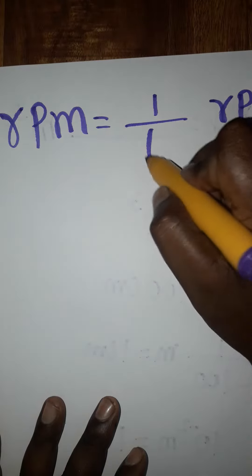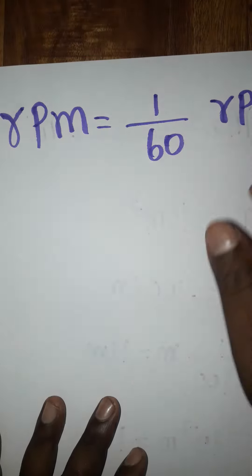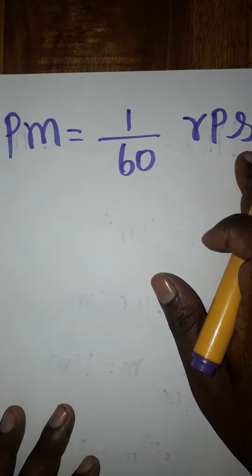So per second means 1 by second. We converted a minute to seconds. 1 minute is 60 seconds.